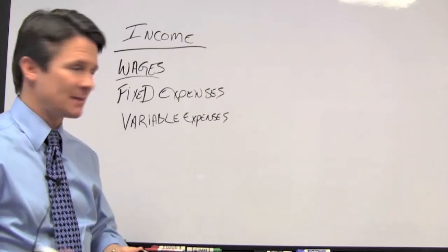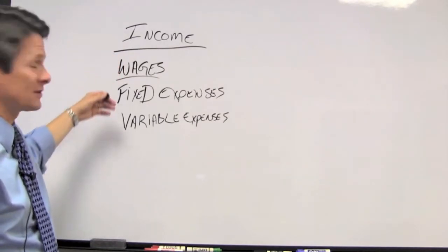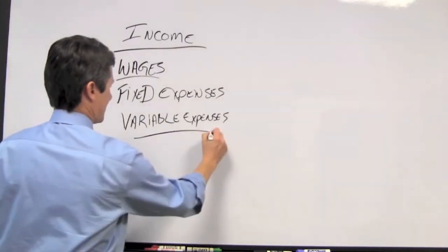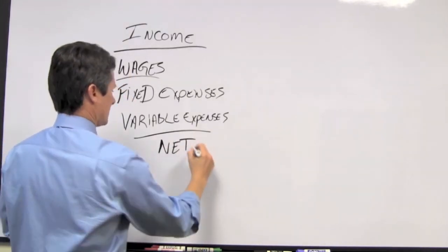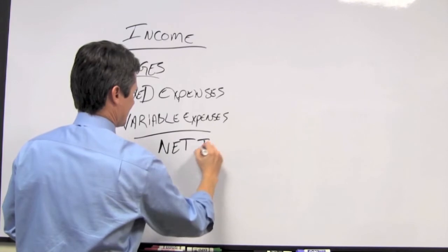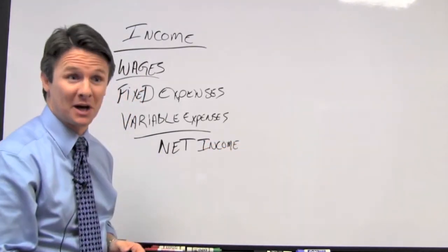Now, to finish the income statement, we take our wages or income, subtract our fixed expenses, our variable expenses, and with luck, we'll have a net income that's positive.